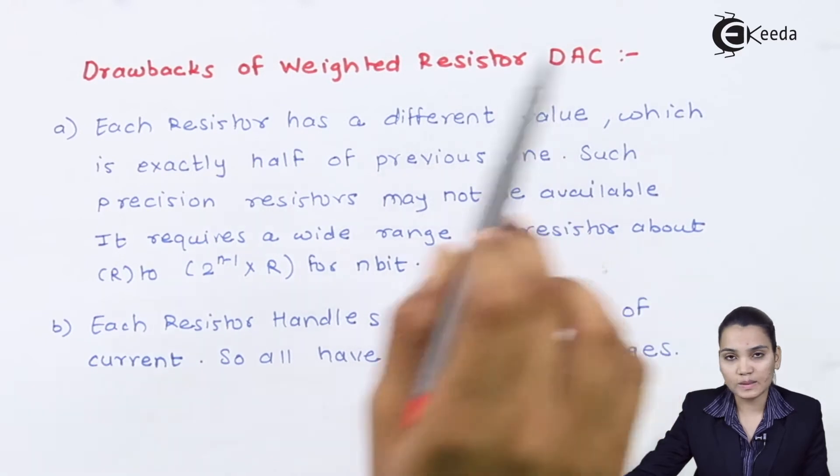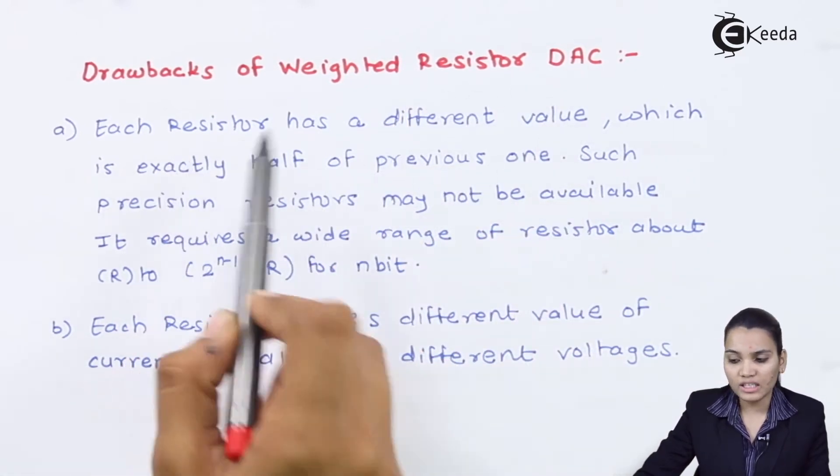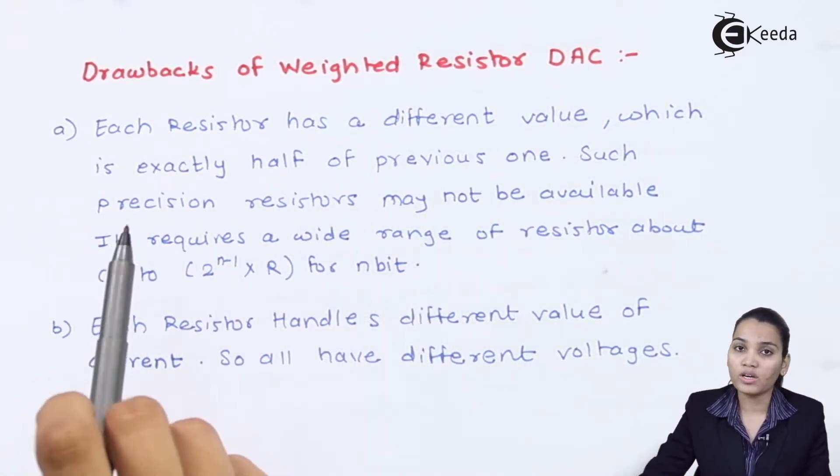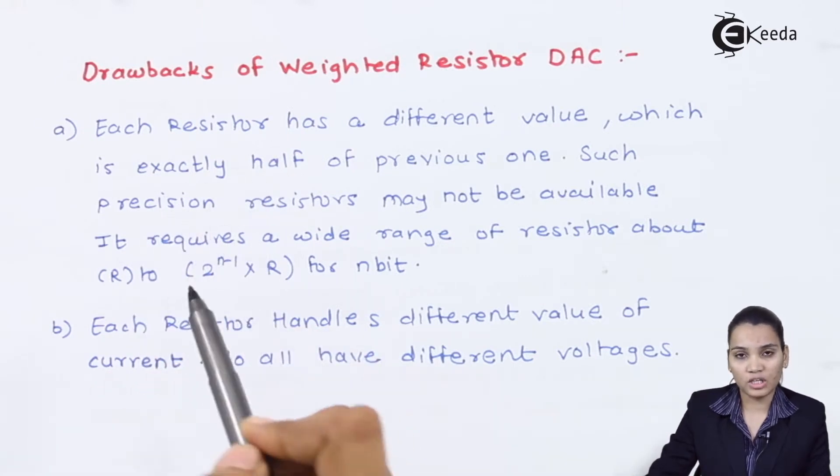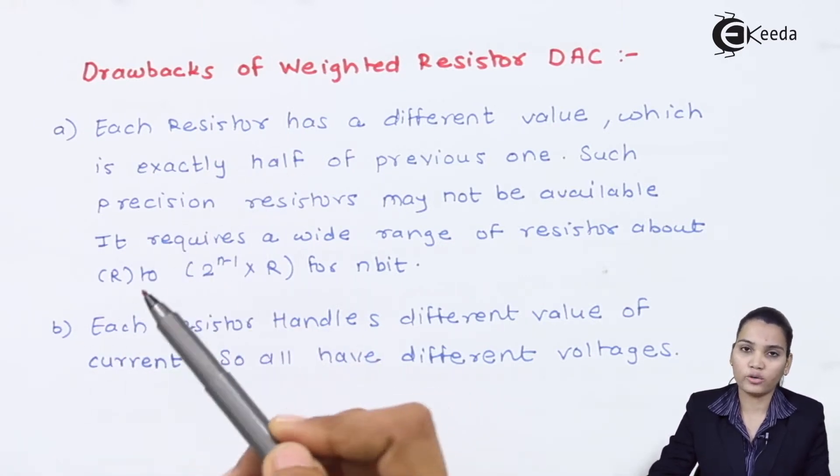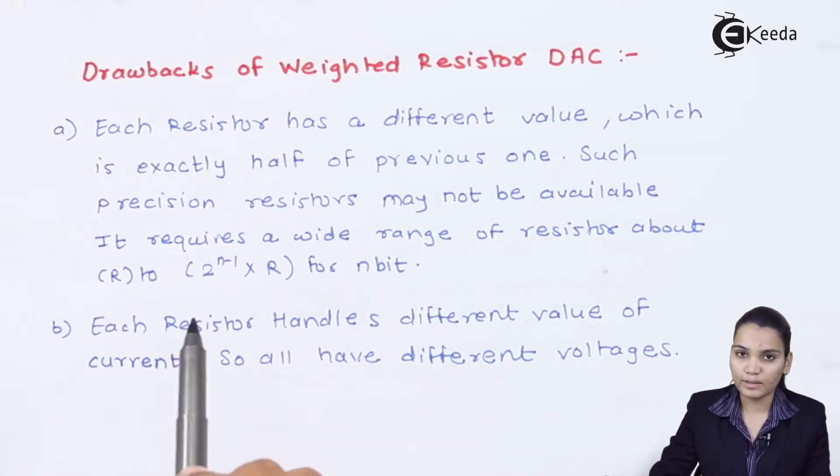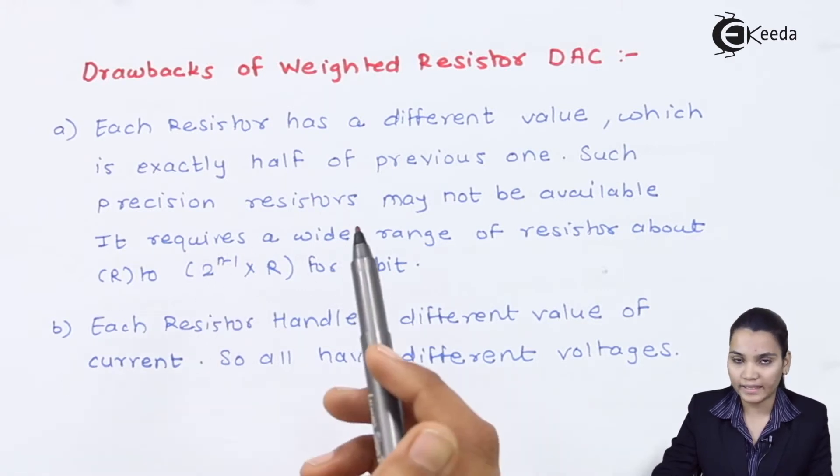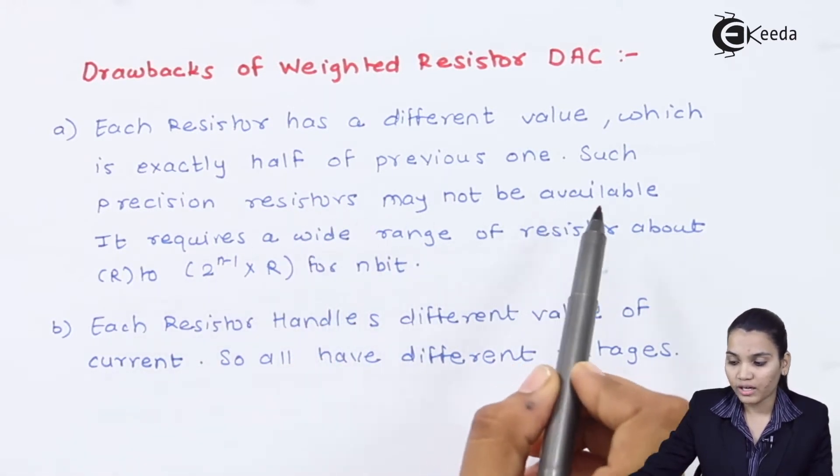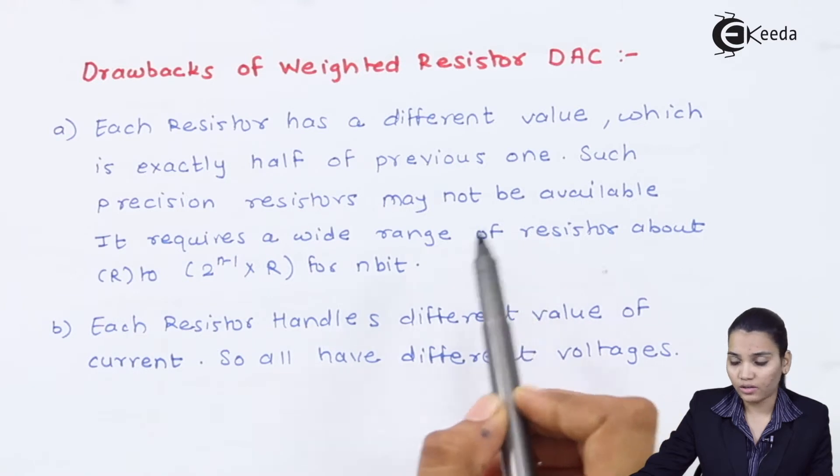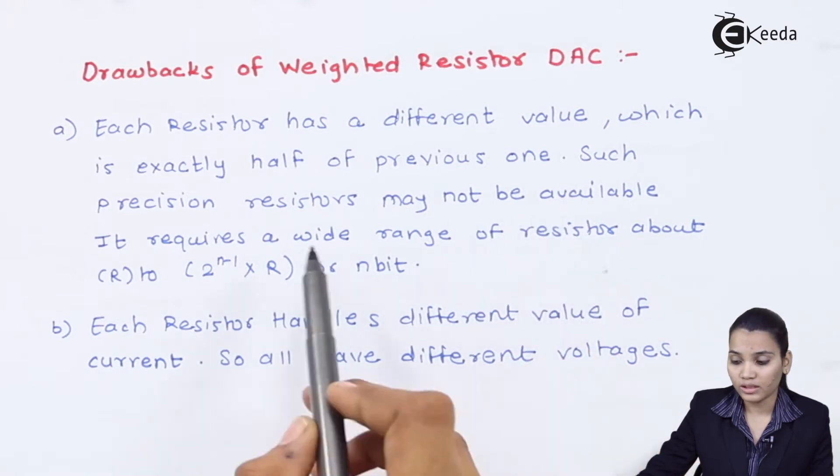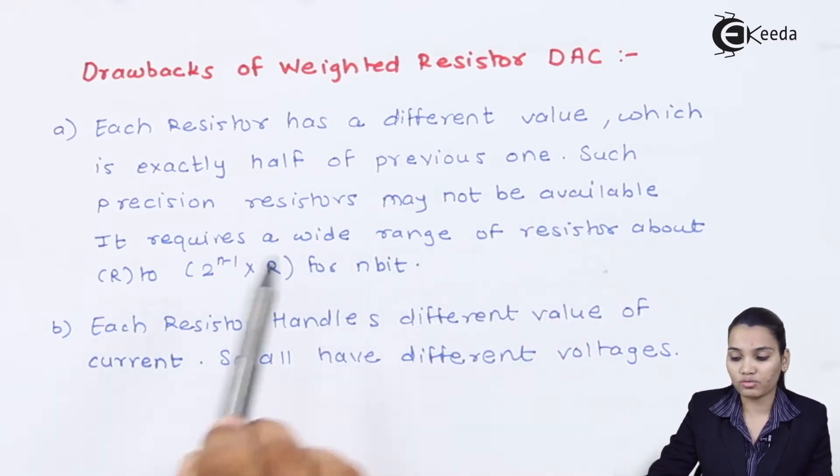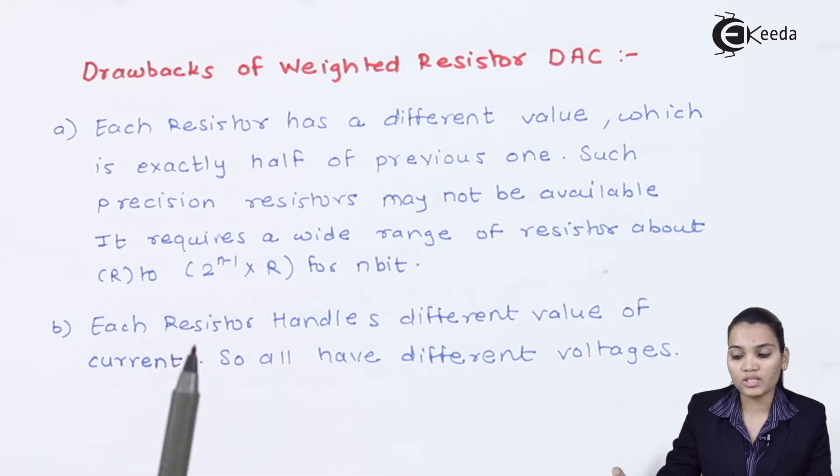Now in DAC, that is in D2A converter, each resistor has a different value. We have seen each LSB resistor is having the twice value of the MSB resistor. That means at every stage the value will get double. Therefore, if we require many resistors or more ladder network, then it requires a very wide range of resistor, that is up to 2 raise to n-1 into R for n bit.